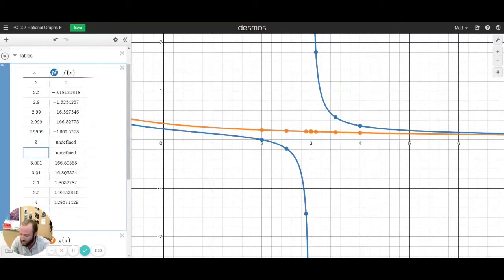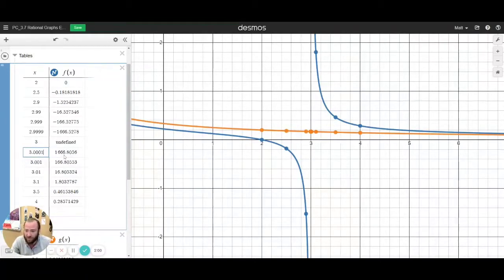You'd find that if you kept getting even closer to 3 here, it just grows hugely in one direction or the other. Well, that makes sense, because on the graph,